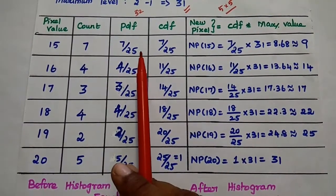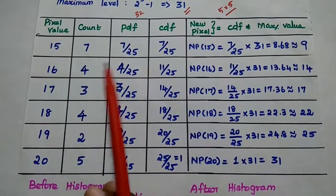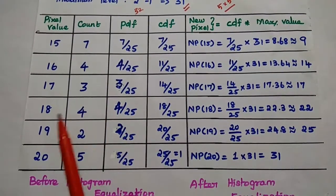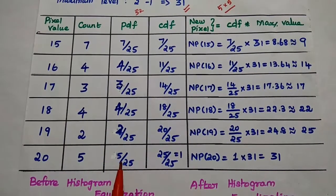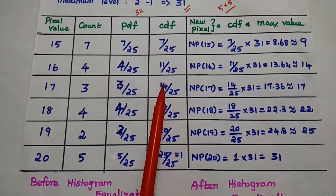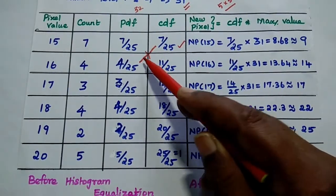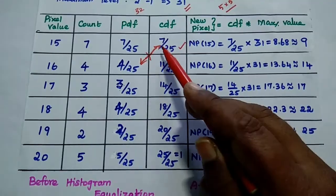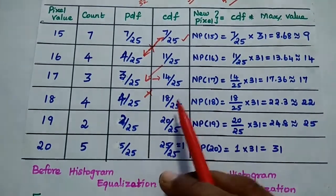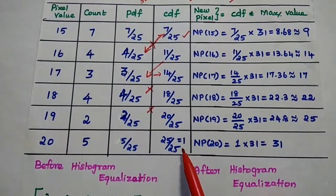Next, we calculate the probability distribution function (PDF). Out of 25 pixels: 15 has probability 7/25, 16 is 4/25, 17 is 3/25, 18 is 4/25, 19 is 2/25, and 20 is 5/25. Then the CDF is computed cumulatively: 7/25, 11/25, 14/25, 18/25, 20/25, and 25/25 which equals 1.